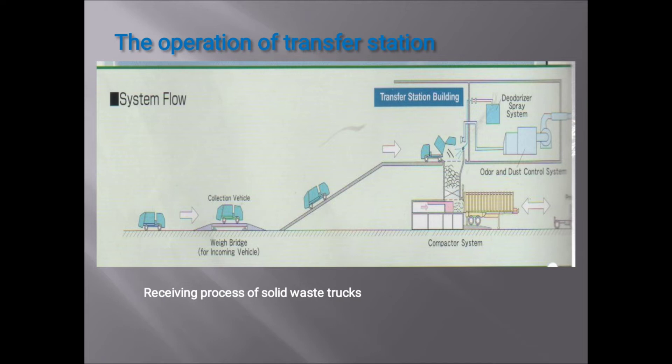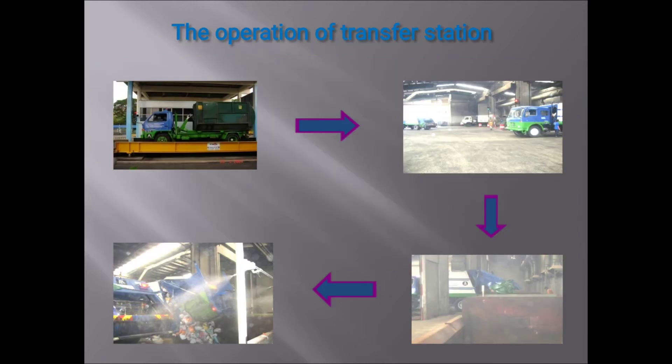This is a typical diagram showing the operation of a transfer station. Once a vehicle arrives, there is a weighing bridge at the entrance to measure the weight of waste to be collected or treated. The containers are then detached, and if compression or any other primary treatment is required, it is carried out. The waste is then taken to the disposal site, and before leaving, the container is disinfected using a spray nozzle.